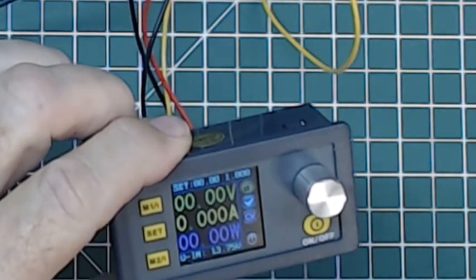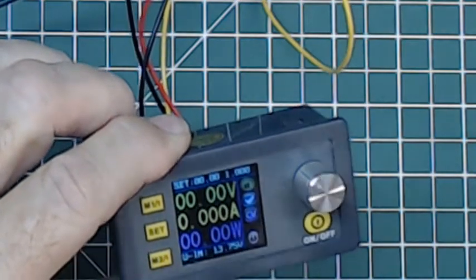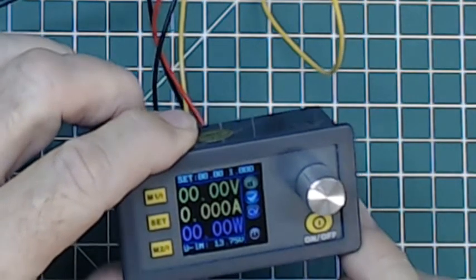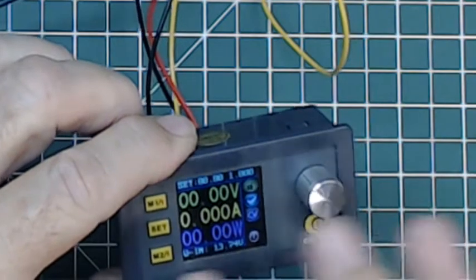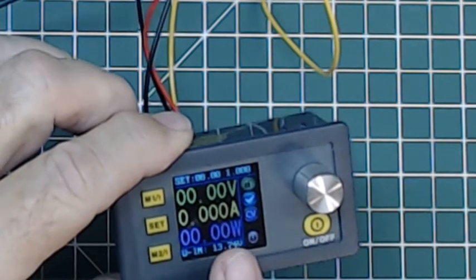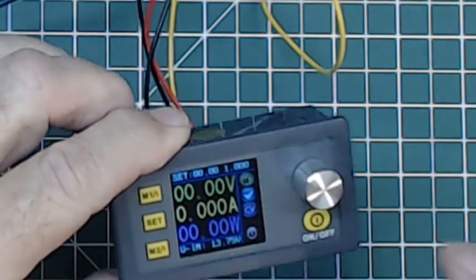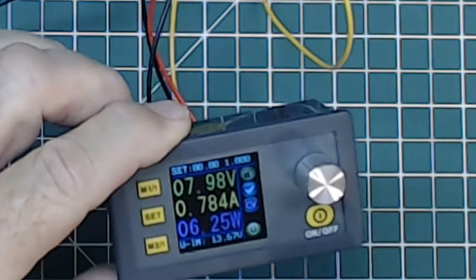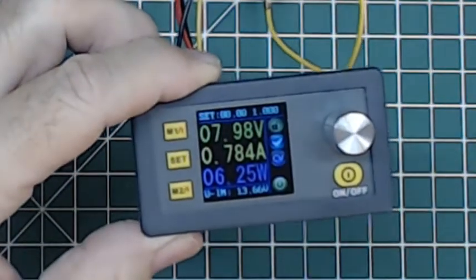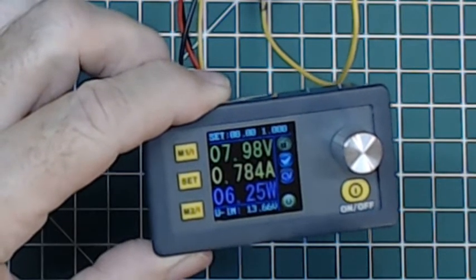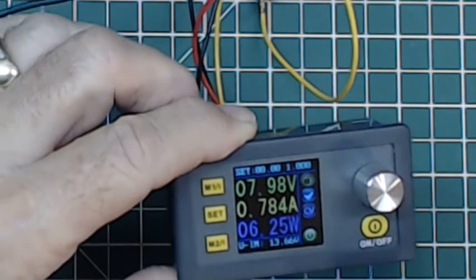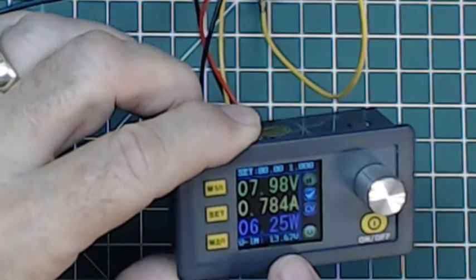If I'm working with a circuit and for some reason it starts drawing a lot of current, it'll limit it to 1 amp or whatever I want—down to hundredths of an amp. So I push the on-off button and it says I'm now putting out 7.9 volts. I had set it to 8 volts with a maximum of 1 amp, and my circuit right now, which is just a couple of power resistors, is drawing 7.84 amps and that equals 6.25 watts.